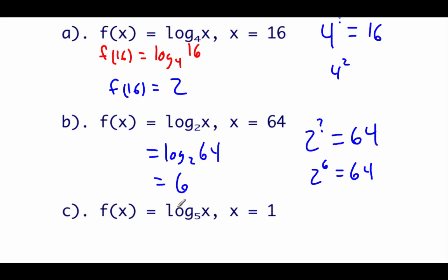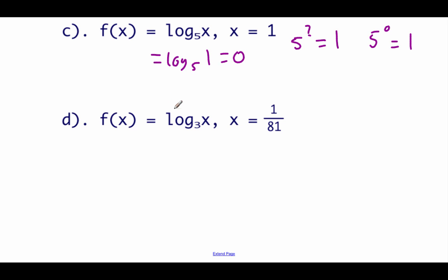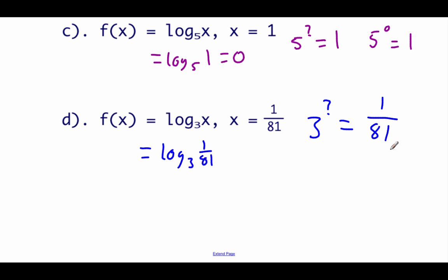Next one says f of x equals log base 5 of x, and we're going to use an x value of 1. So log base 5 of 1 — what power of 5 gives us 1? Anything to a 0 power gives us 1, so log base 5 of 1 is 0. The last one says f of x equals log base 3 of x, using an x value of 1 over 81. What power of 3 lands us at 1 over 81? Since this is a fraction, it's a negative power — 3 to the negative fourth is 1 over 81, so our answer is negative 4.